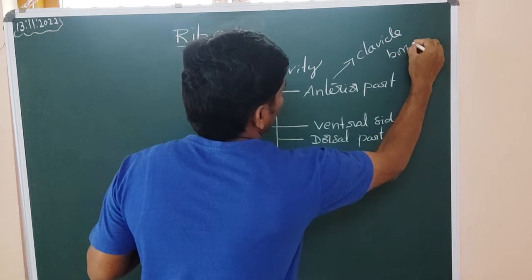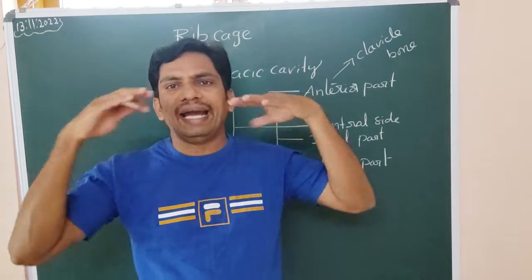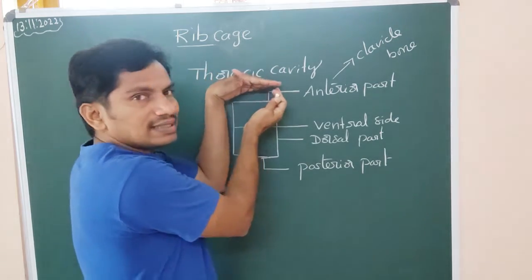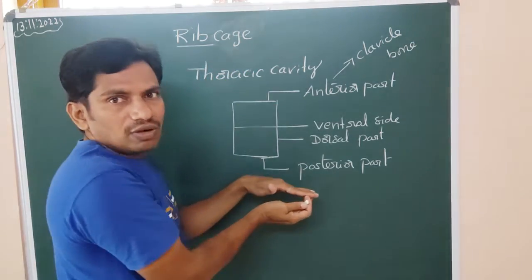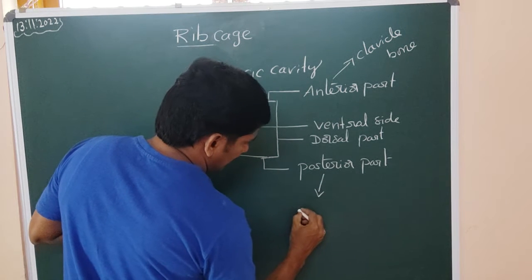Clavicle bone and neck muscles, which form the anterior portion. As it's ceiling, here is the floor there - the posterior part, which is the diaphragm.